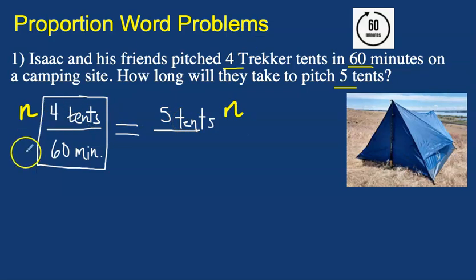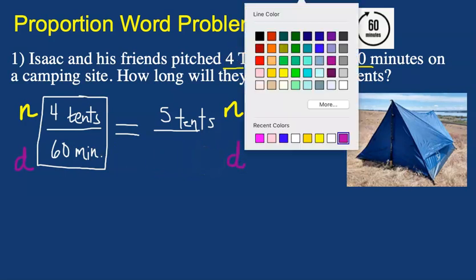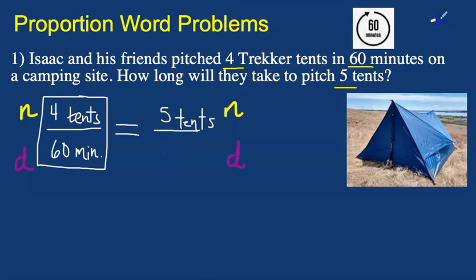And then I want you to notice that in the denominator on the left side, we have the time in minutes. So that means in the denominator on the right side, we're also going to have the time in minutes. Now we do not know what the time is. Instead of putting a question mark for the amount of time it takes to set up 5 tents, I want you to use a variable. I could use x, but if this is talking about minutes and time, then I think I should use t or m. I'm going to go ahead and choose m to represent minutes, because we're trying to figure out how long it will take to pitch 5 tents.